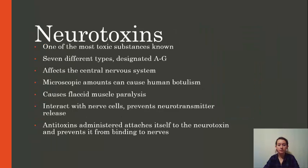The neurotoxins that these bacteria produce are some of the most toxic biological substances known to man. There are seven different types, designated by the letters A through G. Only types A, B, E, and F are toxic to humans, but all of these neurotoxins are able to affect either mammals or humans in some way.